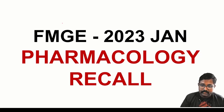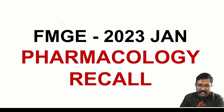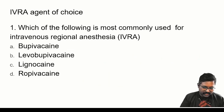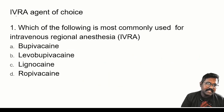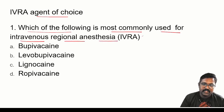Hi everyone. Welcome back to FMG 2023 JAN Pharmacology MCQ Recall. Myself Padmanabha DS. Let us move on to what are all the questions asked in your FMG 2023 JAN exam and find out the right answers. Coming to the first question, they asked regarding the IVRA agent of choice — which of the following is most commonly used for intravenous regional anesthesia?